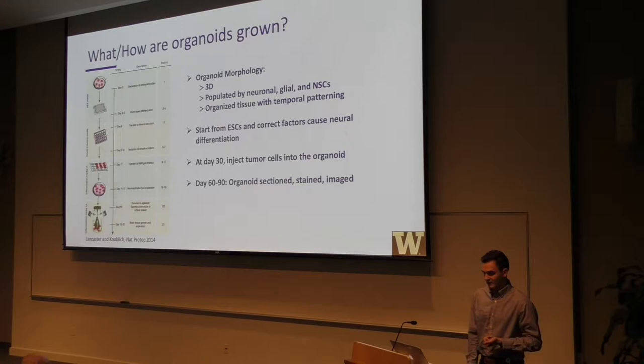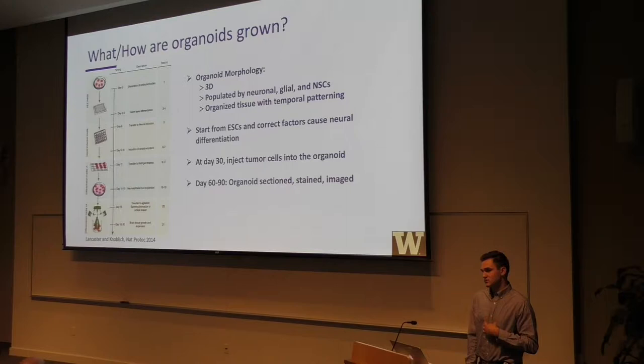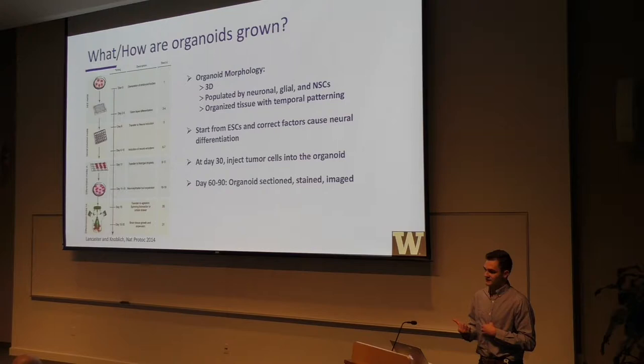What we did with these organoids is, around day 30 of their life, we injected them with GBM tumor cells that Dr. Patel resected from a patient. Then around day 60 through 90, we would snap freeze these organoids. I would then section them, stain them, and image them.